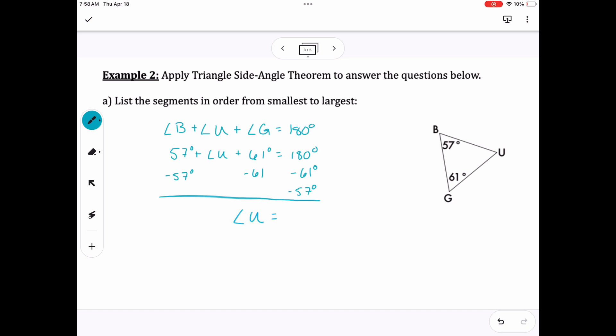Since I know B and G, I'm going to plug those in. And I find that angle U is 62 by subtracting 61 and 57 from 180, which means U is the largest angle. So opposite of that is the largest side, so BG is the largest side.